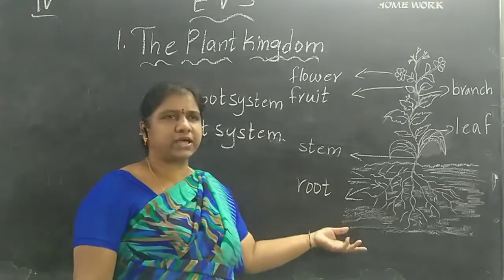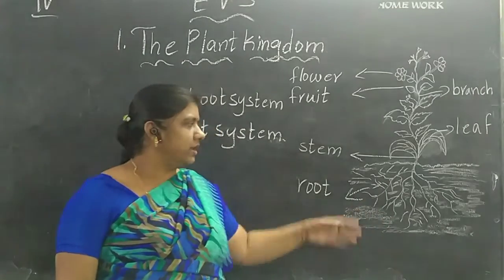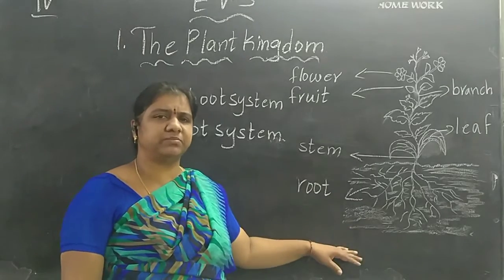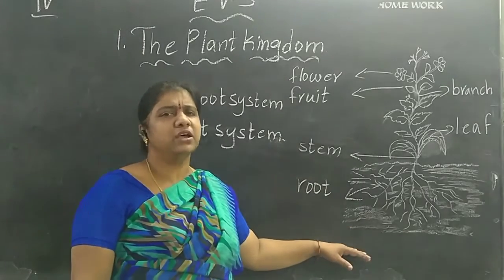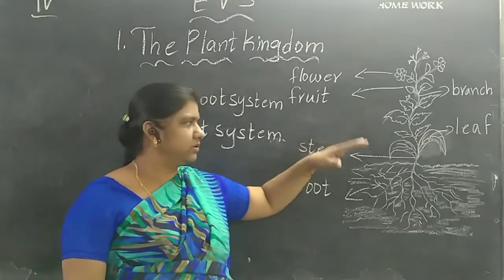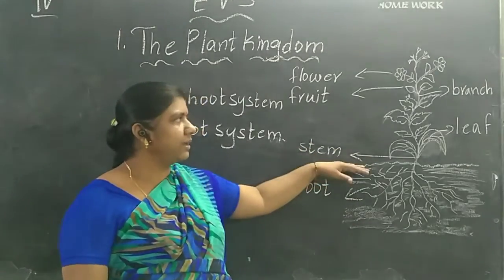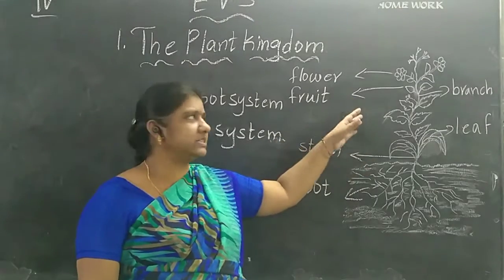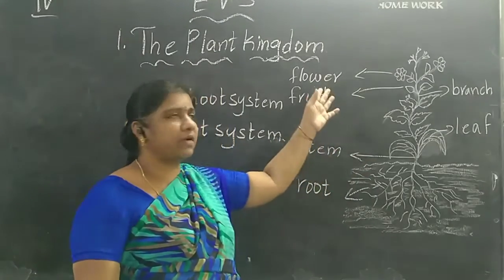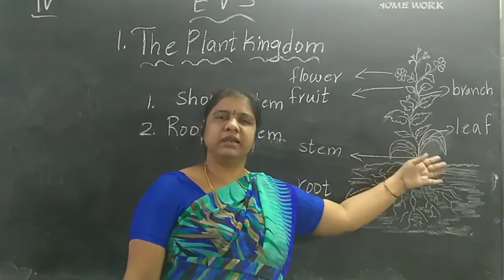The roots are fixed to the soil. The below-soil part is called the root system, and the above part is called the shoot system. The shoot system covers flowers, fruit, stem, branches, and leaves.